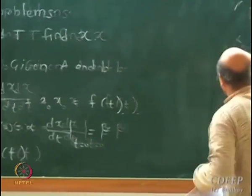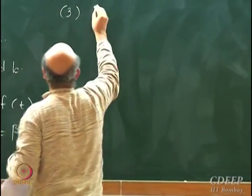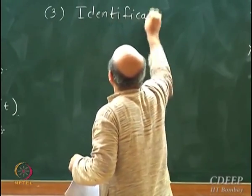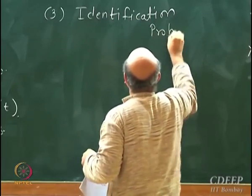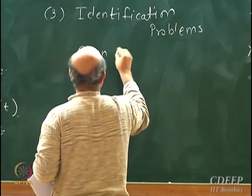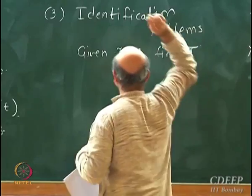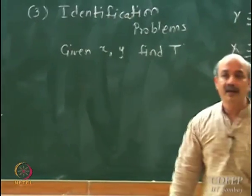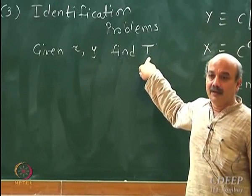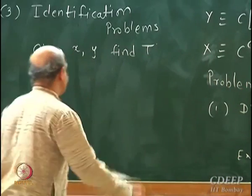The third class of problems that you encounter in engineering mathematics are identification problems. Here you are given X and Y and you are asked to find out the operator T. The classic problem here is model parameter estimation.